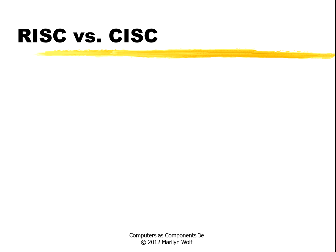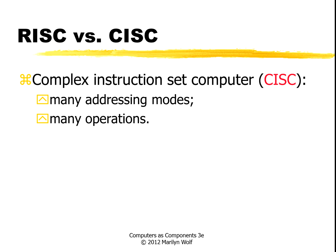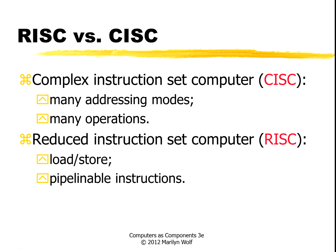You'll also hear the terms RISC and CISC. CISC stands for complex instruction set computer, which has many different addressing modes and many different types of operations. A RISC machine, or reduced instruction set computer, is designed as a load-store architecture — the only instructions that can directly access memory are the load and the store. Operations like ADD, for example, can't operate directly on memory. RISC machines allow us to more easily build high-performance, pipelineable machines.